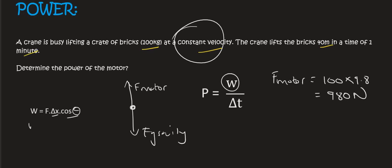So then the work of the motor will be 980 times by the distance, which is 40 meters. Now the crate is busy moving up, and the motor is moving or working upwards. And so that's cos, not 180, cos 0. And so then 980 multiplied by 40 is going to give a work of 39,200 joules.